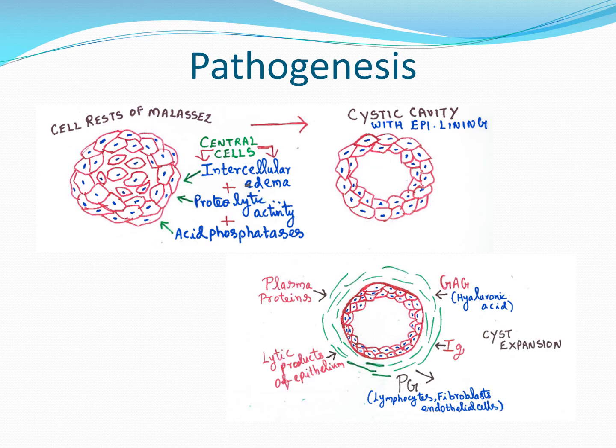As the epithelial cells proliferate, the island or aggregate of epithelial cells multiplies and enlarges. As this expanding mass grows, some cells in the center may not receive sufficient nutrition because the blood supply from the surrounding connective tissue cannot reach the center. As a result, some epithelial cells present in the center will undergo necrosis.